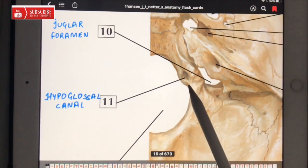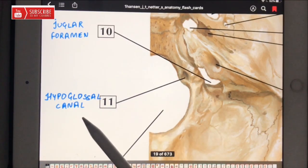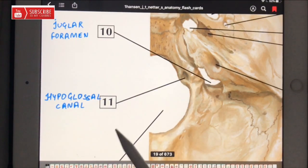Now come to the eleventh. Number eleven is the hypoglossal canal, and through the hypoglossal canal, as its name represents, the hypoglossal nerve passes, that is the twelfth cranial nerve.